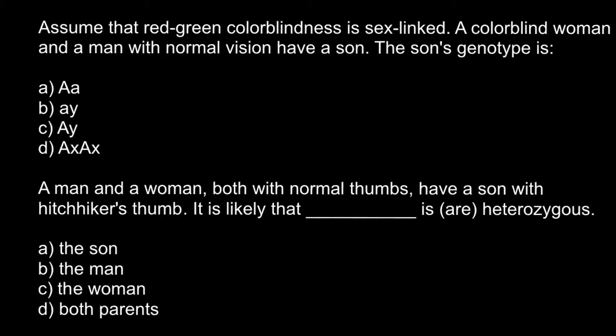So here's the first question. Assume that red-green colorblindness is sex-linked. A colorblind woman and a man with normal vision have a son. The son's genotype is... and here are four answers to choose from. I'll use red color to designate the defective allele, or I'll use the same color to designate the whole chromosome.